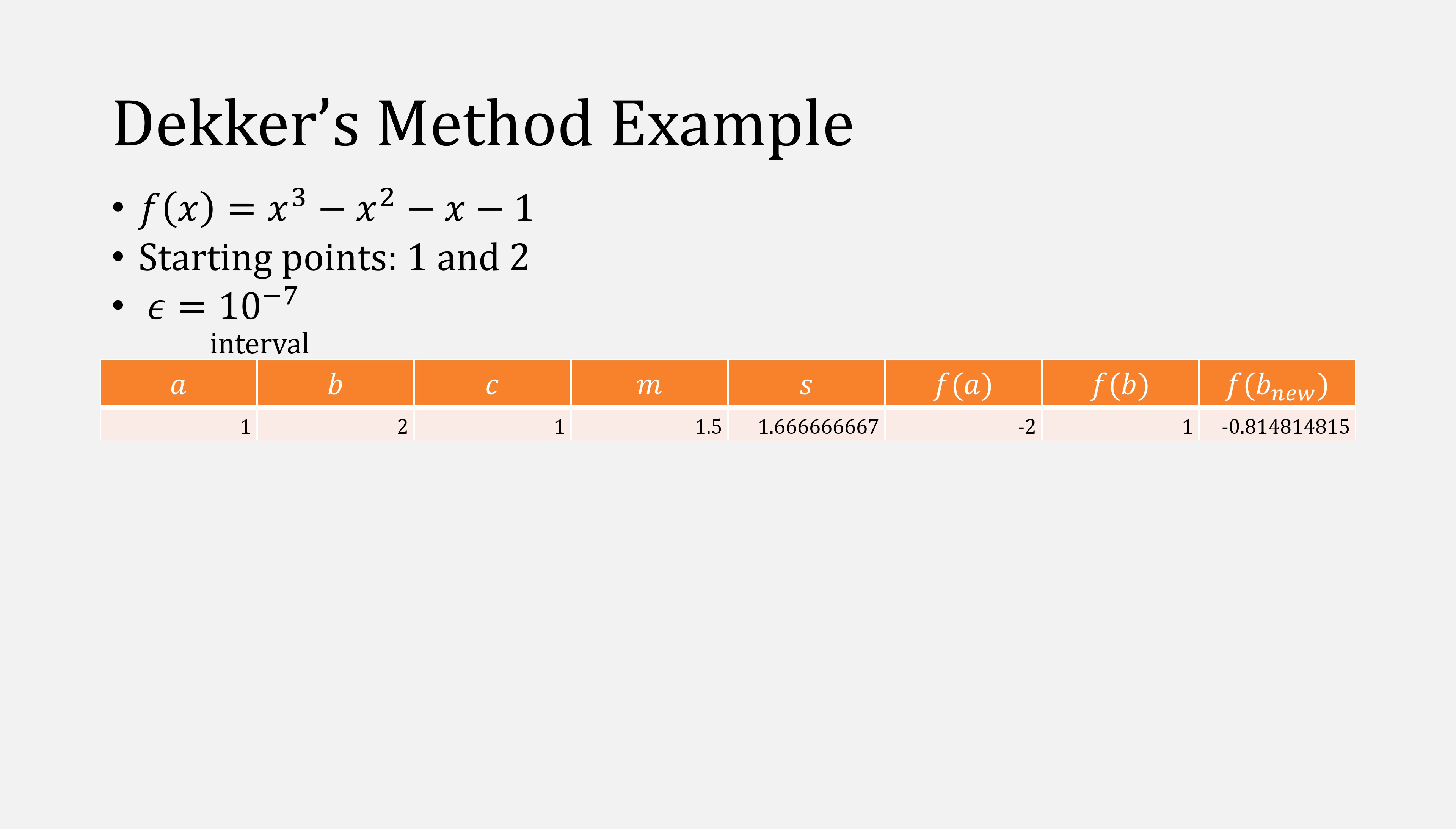Let's look at this same example numerically. Given our same function x cubed minus x squared minus x minus 1, we'll pick the starting points of 1 and 2, and we'll use an epsilon of 10 to the minus 7. Here's what our first iteration is going to look like. a and b are the interval points, c is the old value of b, initially it's a, m is simply a plus b over 2, s is our secant intercept, and f(a) and f(b) have different signs.